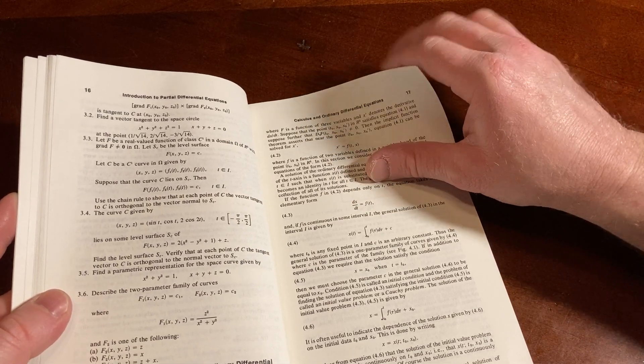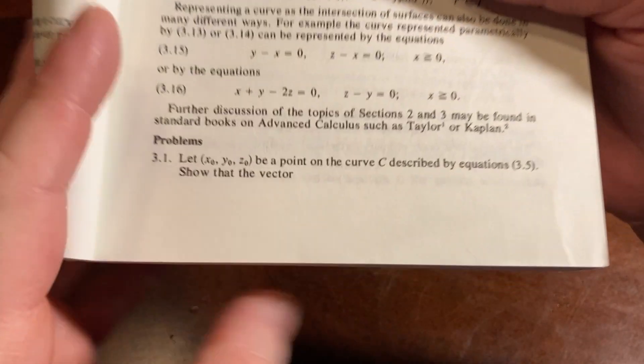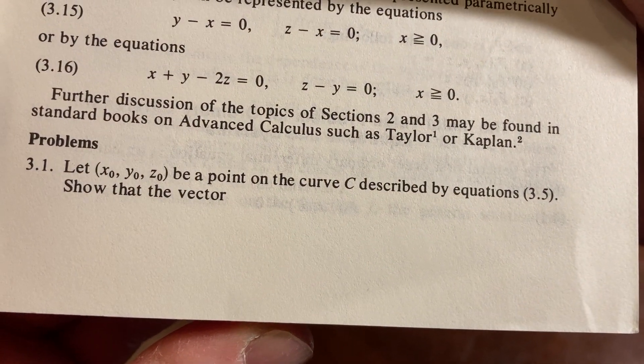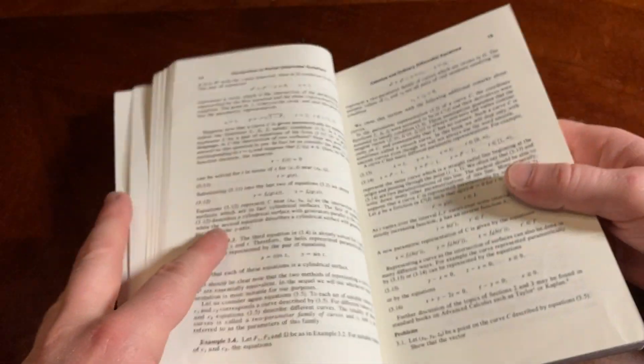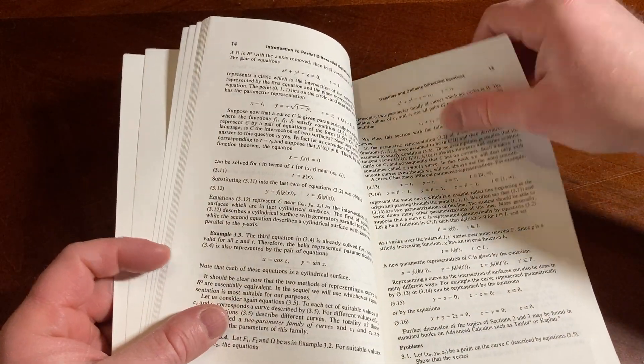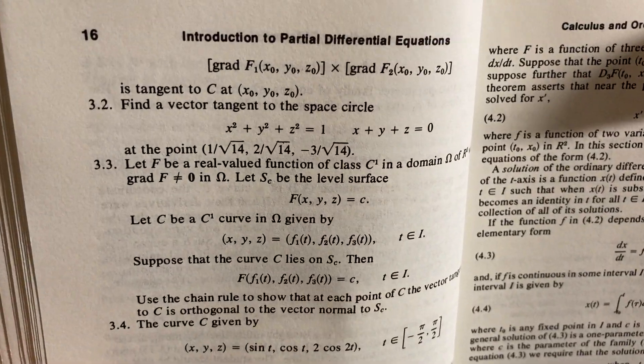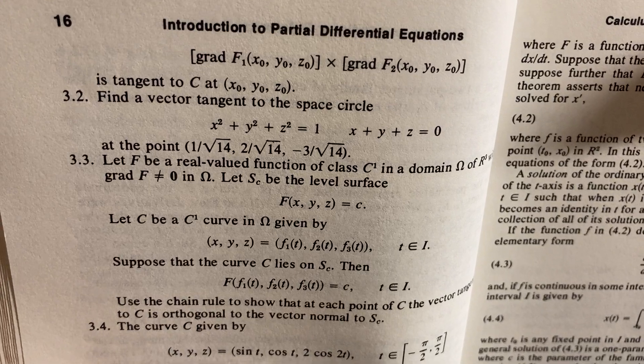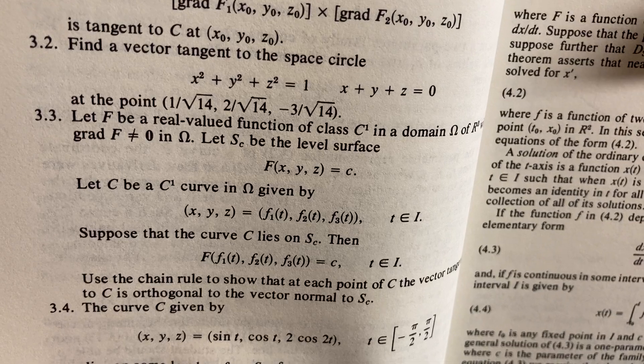And you have exercises. Here's some of the exercises. Let that be a point on the curve C described by equations 3.5. Show that the vector is tangent to C. Find a vector tangent to the space circle.